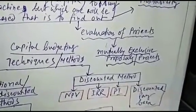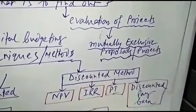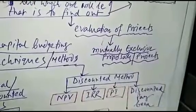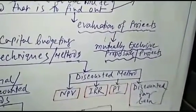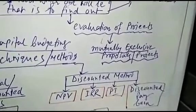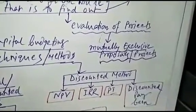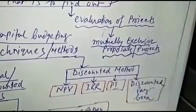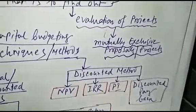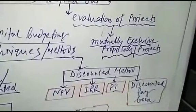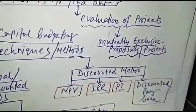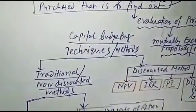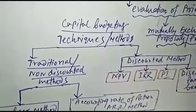You have money to buy a machine but which one will be purchased needs to be found out. This is called evaluation of projects. Capital budgeting is a summation of all techniques by which you can evaluate your project and take the right decision. You will have many projects from which you have to choose. You need techniques to take the right decision.